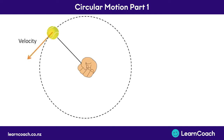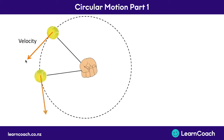In level two we learned that when something is getting spun around in a circle — so it has circular motion — it's going to have a velocity that's at a tangent to the circle. It will carry on moving around and at every single point it's always going to have a velocity that is tangent to the circle.